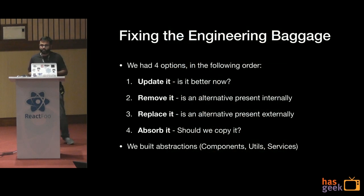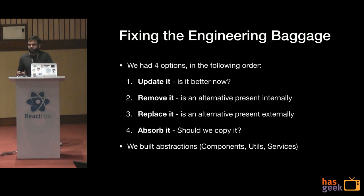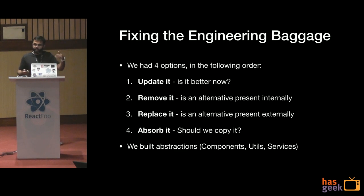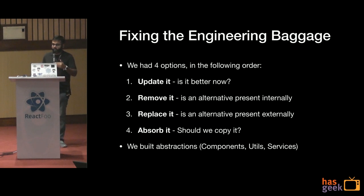To fix this kind of engineering baggage, we have four options. Update it — is this library better now, popular, and does it continue to have good support? Remove it — can we make an alternative in the existing codebase? Replace it — is there some other library which does a better job? Absorb it — if we can't get rid of it and can't keep fixing issues, maybe copy it into our codebase so we can replace it later. We ended up building a few abstractions for components, lodash functions, and other utils, and for services that work with business logic, so it becomes easier to change these abstractions later on.